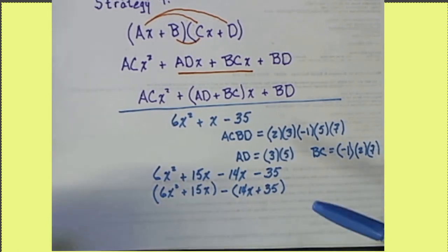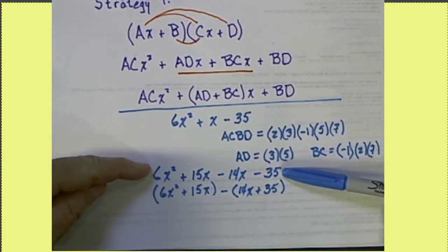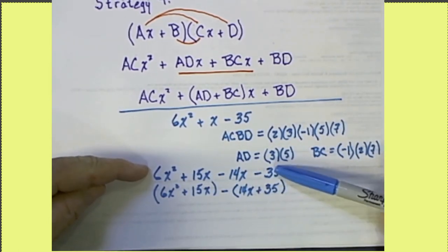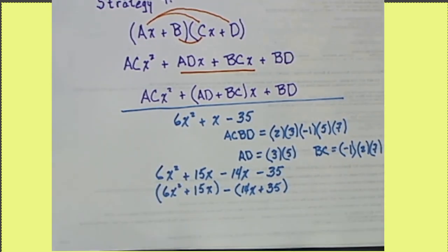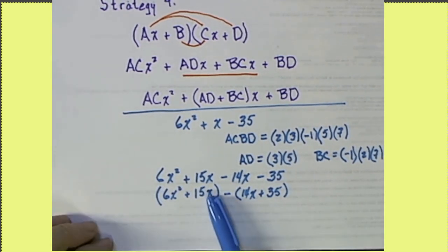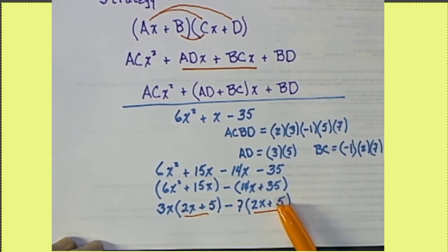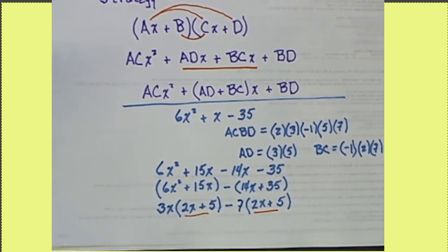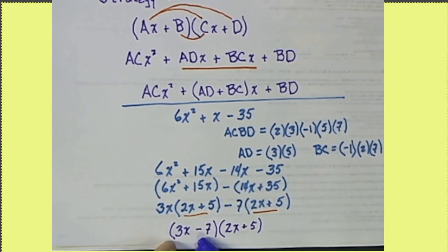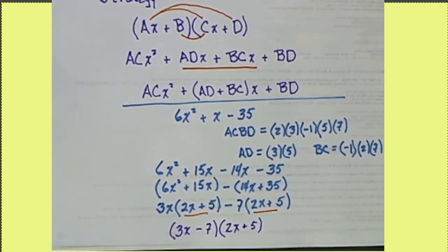So what we're doing at this point is factoring this four-term expression by grouping. In this first grouping, we can factor out an x, it's a common term, and we can factor out a 3. This second grouping has a 7 as a common factor. And we now have this common factor in each of these terms. So we get the result, 3x minus 7 times 2x plus 5.